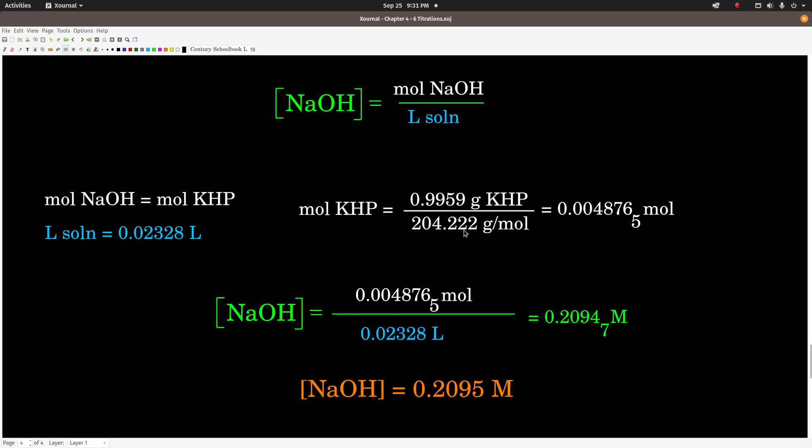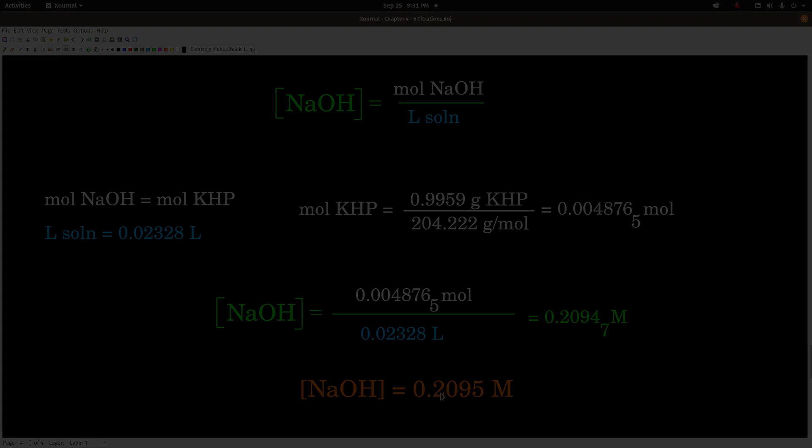Okay, this number right here, 204.222, I got that by calculating the molar mass of KHP. I do the division, I get the moles of KHP, which is equal to the moles of sodium hydroxide. So I just put that up here, divide by the volume, get my answer, round, and there we go. 0.2095 molar sodium hydroxide. That's all there is to it.